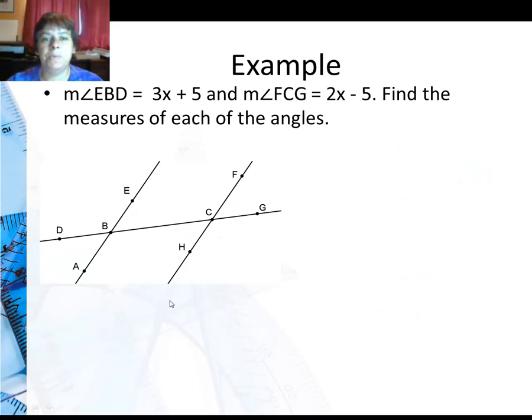Now for our last example, we're going to look at angle EBD is now 3x plus 5, and FCG is 2x minus 5. Well, what kind of angle pair is this? They're both on the same side of the transversal, and they're both outside. So they're same side exterior angles, all right?